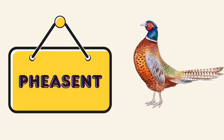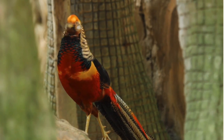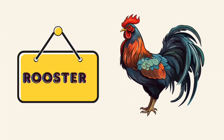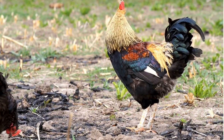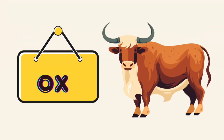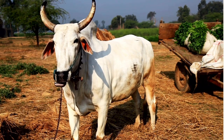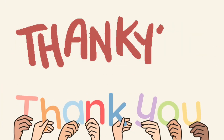Pheasant — this is a pheasant. Rooster — this is a rooster. Ox — this is an ox. Thank you.